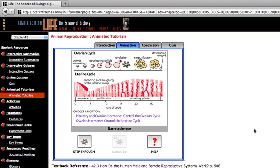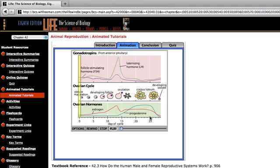The ovarian and uterine cycles are controlled by an interplay of hormones. Select an option. We're going to select the first option, starting from the pituitary gland and how the hormones regulate the ovary in terms of how the menstrual cycle actually occurs.